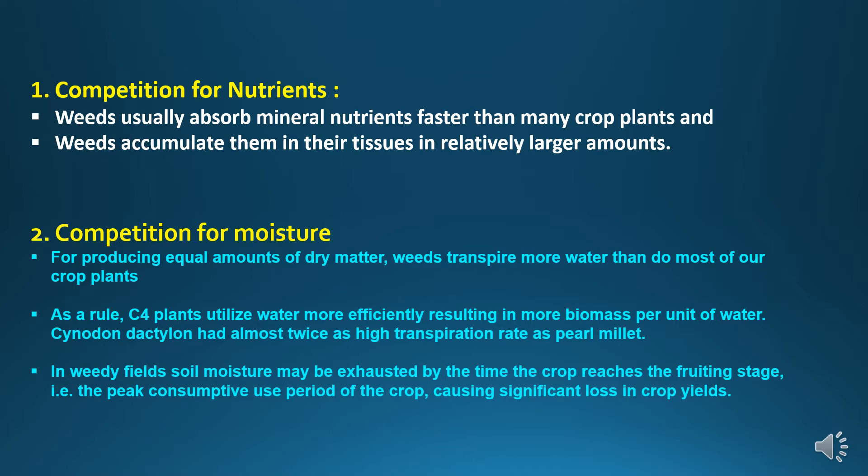Second is competition for moisture. In general, for producing equal amounts of dry matter, weeds transpire more water than most crop plants. It becomes increasingly critical with increasing soil moisture stress, as found in arid and semi-arid areas. C4 plants utilize water more efficiently, resulting in more biomass per unit of water. Cynodon dactylon has almost twice as high a transpiration rate as pearl millet. In weedy fields, soil moisture may be exhausted by the time the crop reaches the fruiting stage, causing significant loss in crop yields.